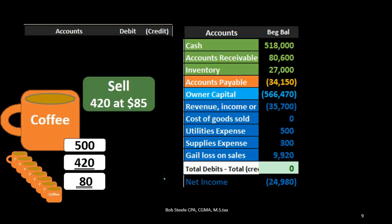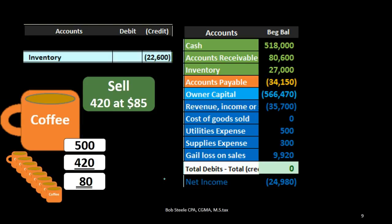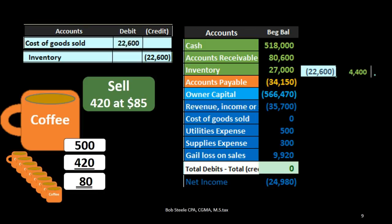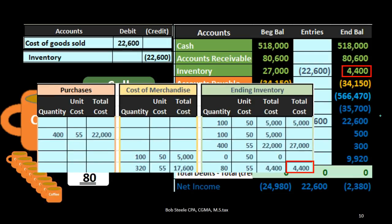Now we post the journal entry for the cost of goods side of the sale. Inventory is credited and goes down by $22,600, bringing inventory down to $4,400, which matches our worksheet. Cost of goods sold — the expense related to using inventory to generate revenue — is debited for $22,600. That $4,400 remaining in inventory now matches exactly what is in our worksheet.